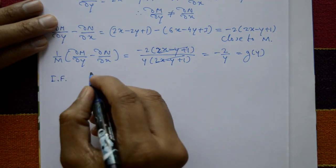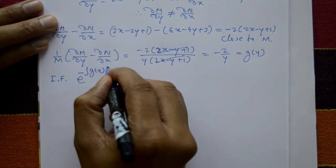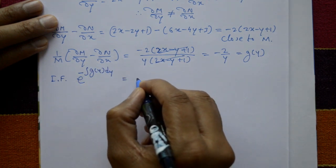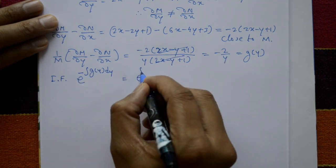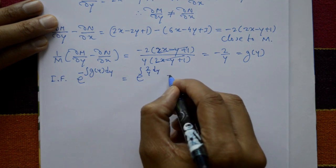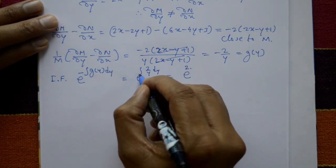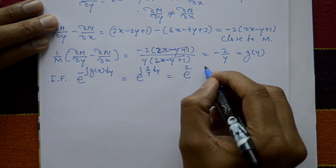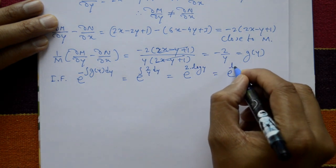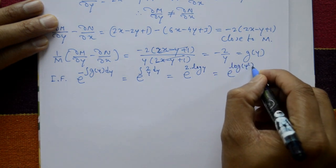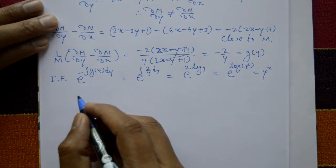The integrating factor is e^(∫g(y)dy) = e^(-∫(-2/y)dy) = e^(2∫(1/y)dy) = e^(2 ln y) = y². So the integrating factor is y².